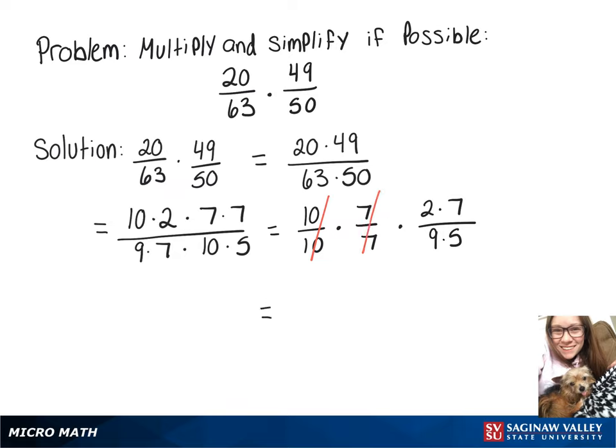And we're left with 2 times 7, which is 14, over 9 times 5, which is 45.